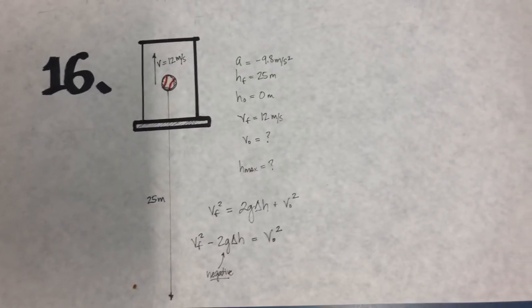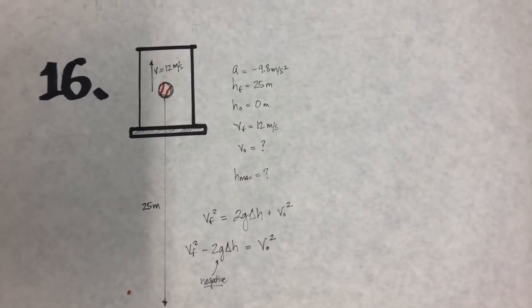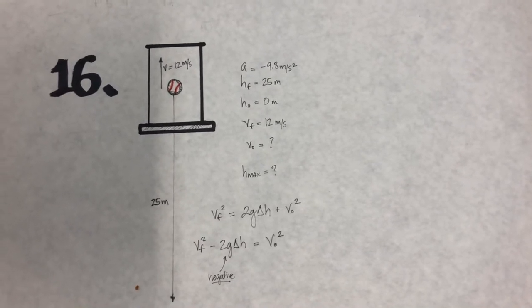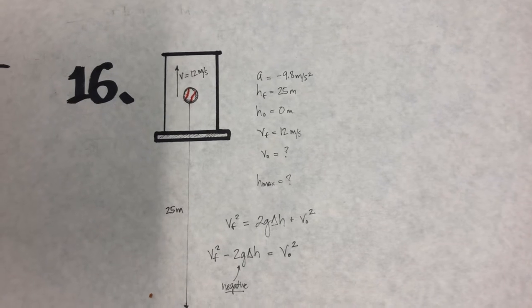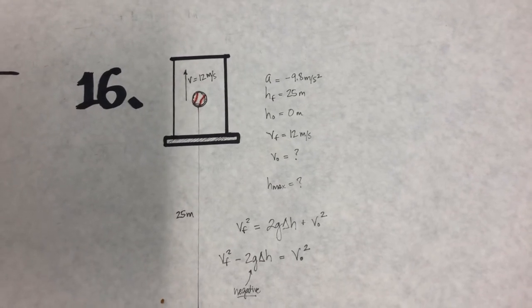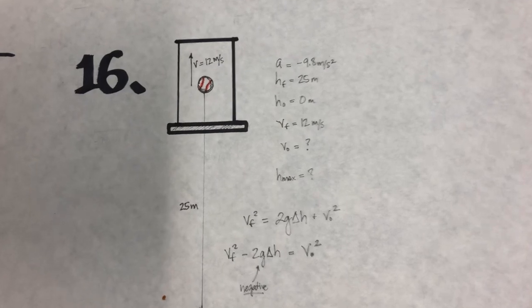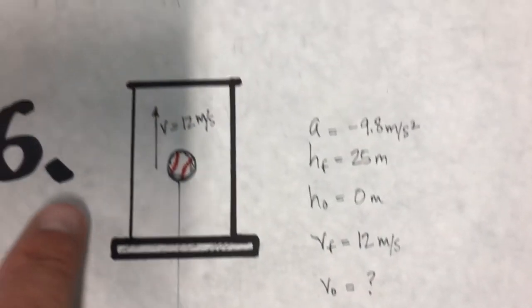Problem 16: A baseball is seen to pass upward by a window 25 meters above the street with a vertical speed of 12 meters per second. If the ball was thrown from the street, a) what was its initial speed and b) what altitude does it reach? So in other words, what will be its max height?